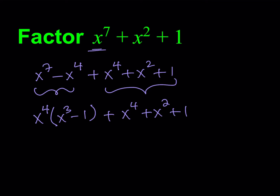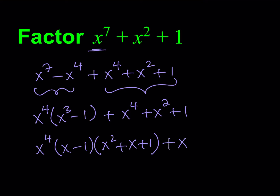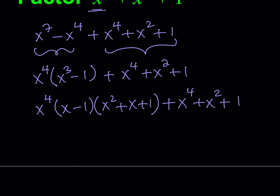If you think about it, x cubed minus 1 can be factored as x minus 1 times x squared plus x plus 1 — this is the difference of 2 cubes. You must know the formula; that's how you factor it. But the second piece, x to the 4th plus x squared plus 1, was not factored yet. The idea is we're going to look for a common factor between the two pieces.